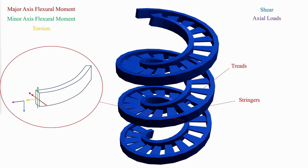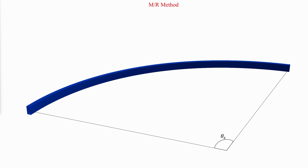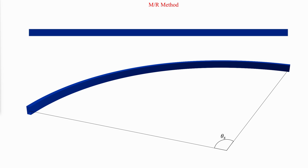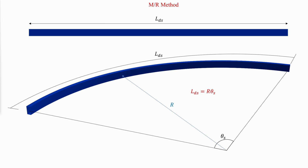I will make a video on how to model horizontally curved members using 2D and 3D finite element models, so please subscribe to not miss it. Another method that can be used to determine the internal forces of a horizontally curved member is the M/R method. The M/R method has been used extensively in design, where the curved beam is modeled as a straight member with a length equal to the developed span length. The shear force V and the out-of-plane flexural moment Mx are calculated as for a straight beam.